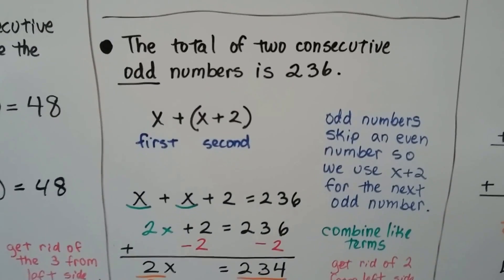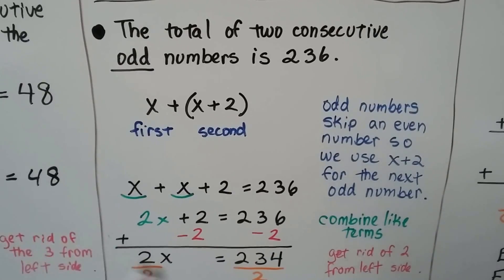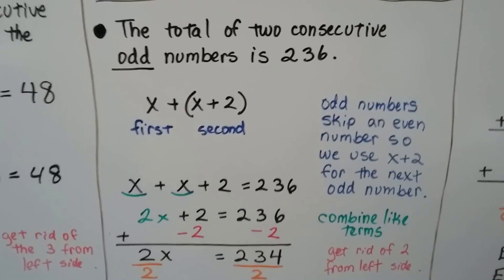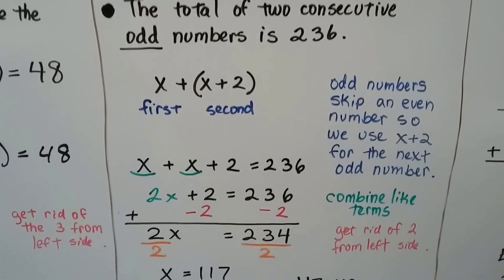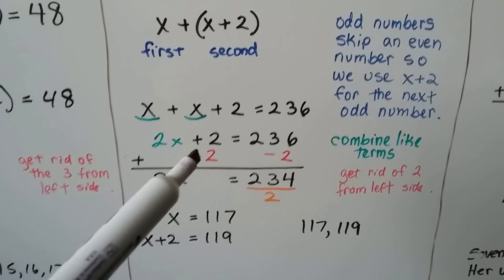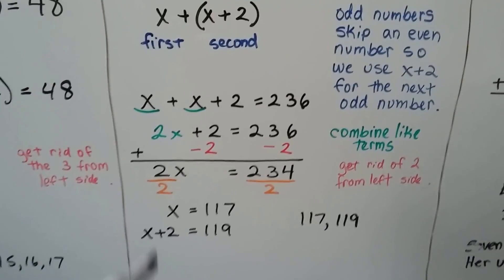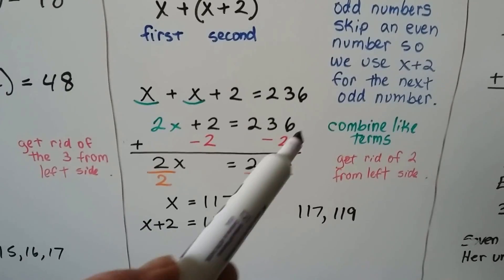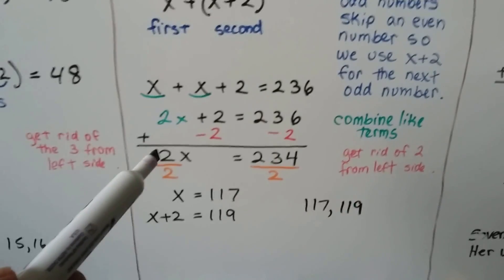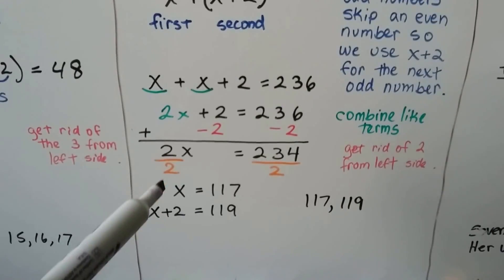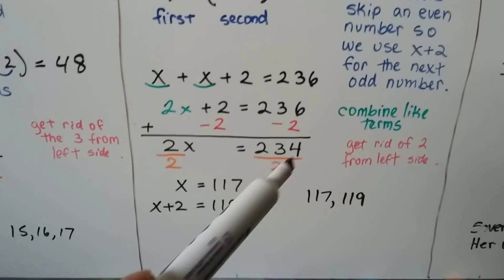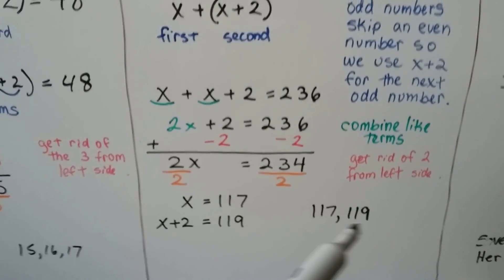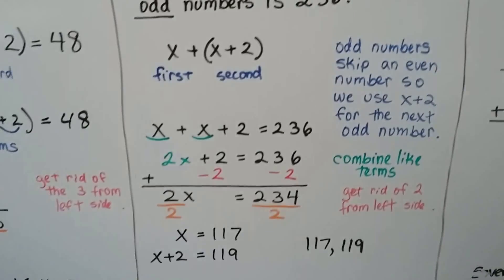The total of two consecutive odd numbers is 236. Odd numbers skip the even number in between, so instead of x plus (x plus 1), we go directly to x plus (x plus 2). Combining like terms gives us 2x plus 2 equals 236. We add negative 2 to both sides: 2x equals 234. Dividing by the coefficient 2, x equals 117, and x plus 2 is 119. Those are two consecutive odd numbers that equal 236.